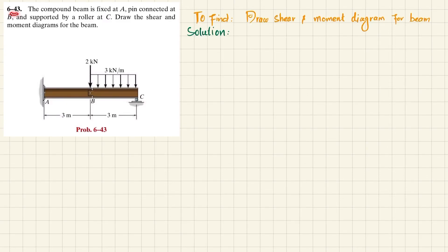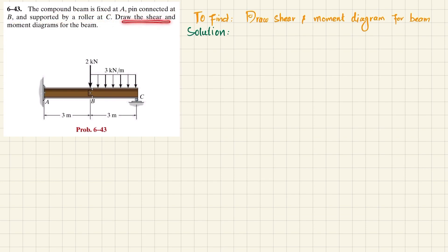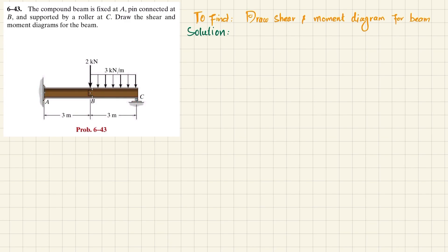Welcome back. Problem 6-43: the compound beam is fixed at A, pin connected at B, and supported by a roller at C. Draw the shear and moment diagram for the beam. You can see this is a compound beam that is pin supported at B, this is the fixed support at A, and there is a roller support at C.